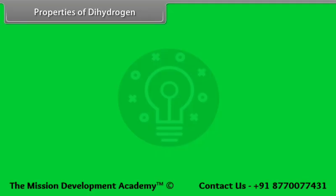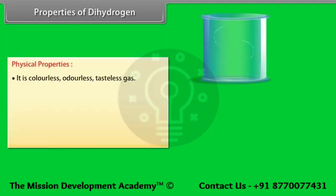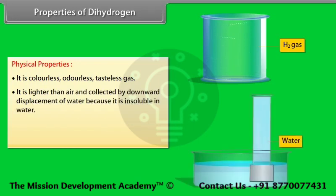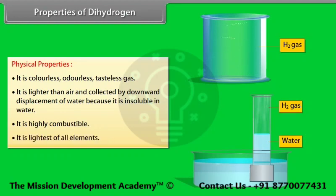Physical properties of dihydrogen: It is a colourless, odourless, tasteless gas. It is lighter than air and collected by downward displacement of water because it is insoluble in water. It is highly combustible and is the lightest of all elements.